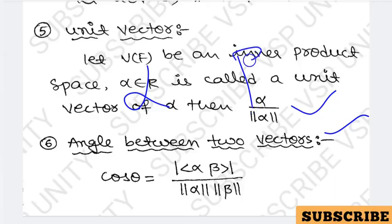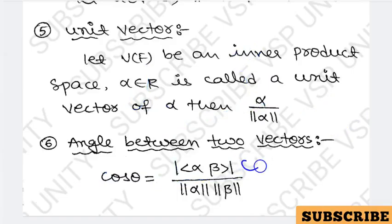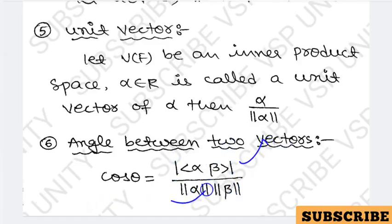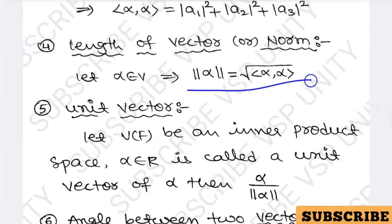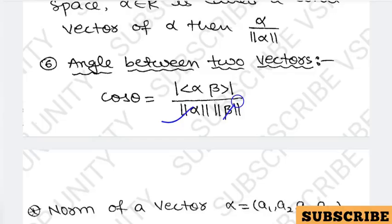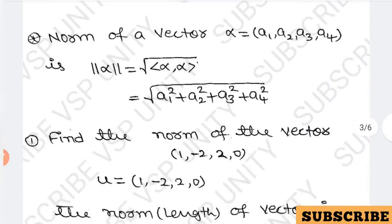For the angle between two vectors alpha and beta, we use: cos(theta) equals the modulus of the inner product of alpha and beta divided by norm(alpha) times norm(beta). In the numerator we take the magnitude of the inner product of alpha and beta, and in the denominator we multiply norm(alpha) by norm(beta).